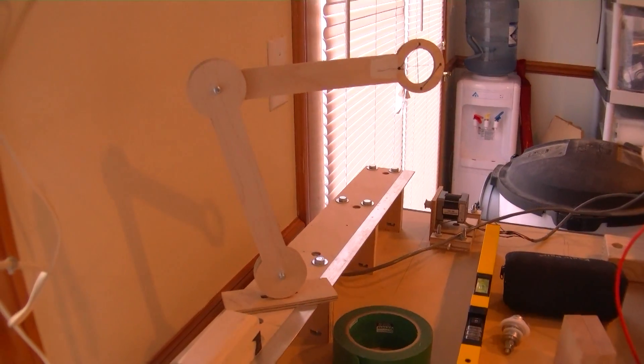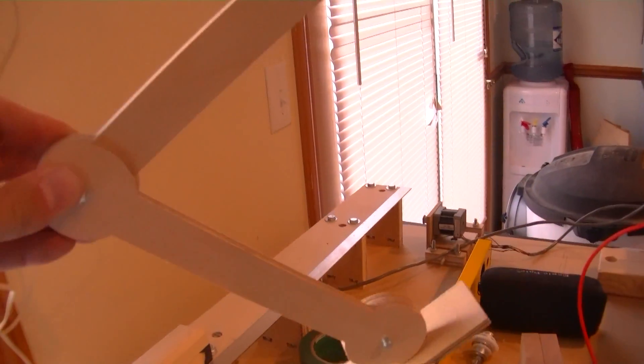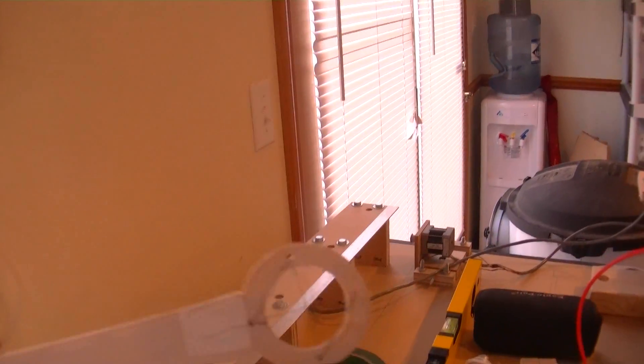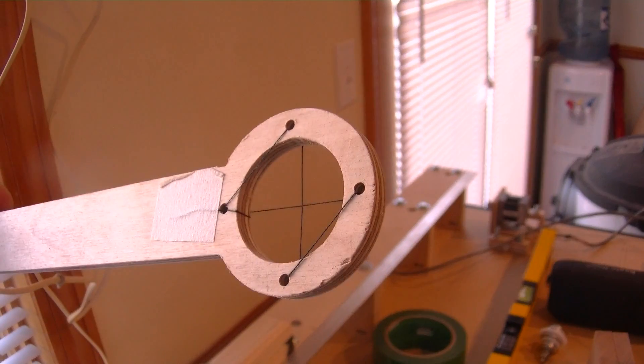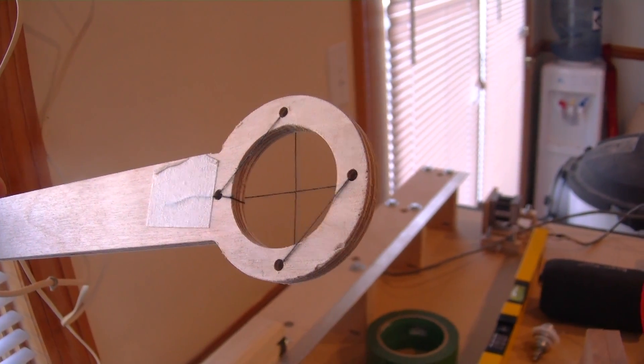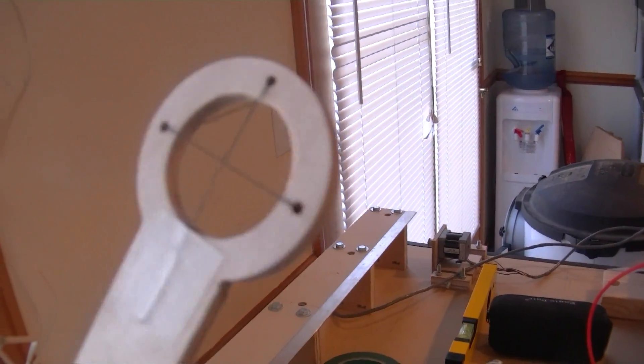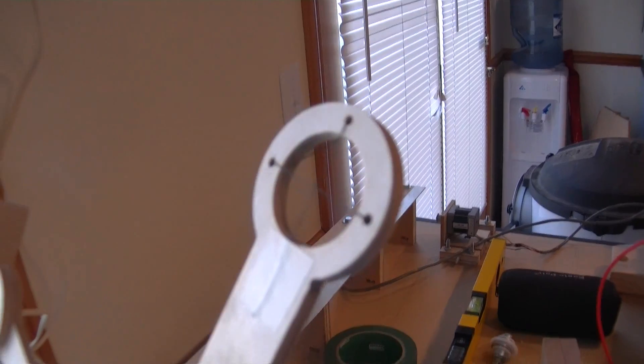Before we start, one thing I did want to mention was this armature assembly that I use for laser alignment. Very simple. Cut on a CNC. Two hinged arms and a simple crosshair, which you can see there, made by drilling four holes and putting some cotton through it. And so I have a crosshair that I can use for doing or maintaining near-field alignment.